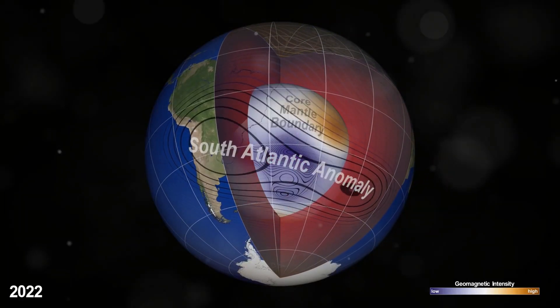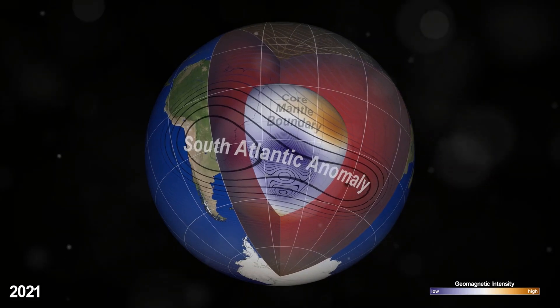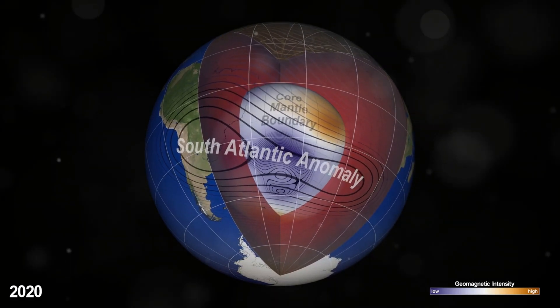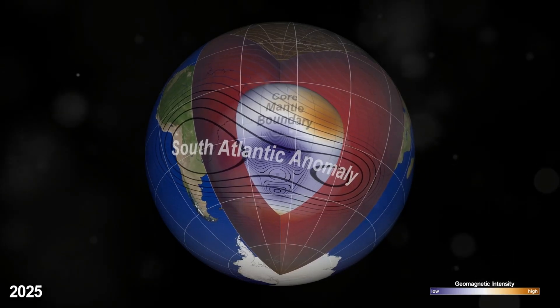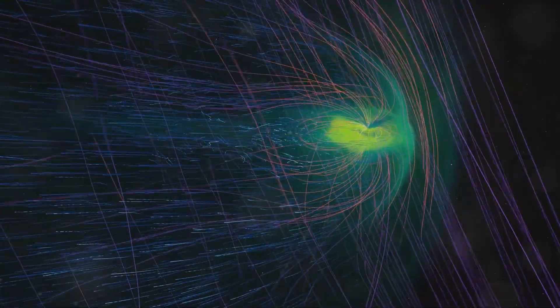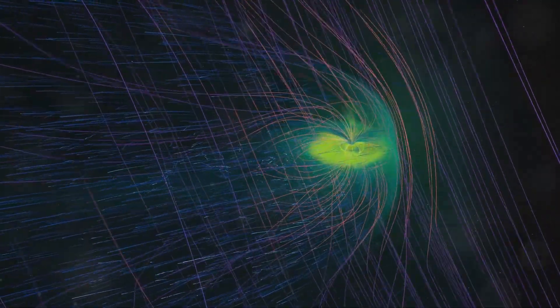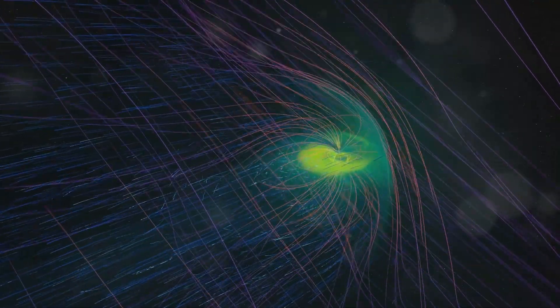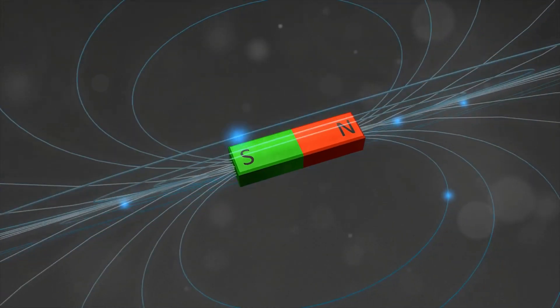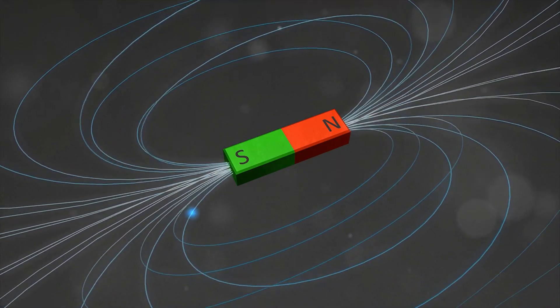Interestingly, the South Atlantic anomaly is not a recent development. A study published in 2020 suggested that this magnetic anomaly may have been recurring for as long as 11 million years. This finding challenges the idea that the SAA is a recent or temporary phenomenon. Instead, it appears to be part of a much larger, recurring cycle of magnetic fluctuations within Earth's core.